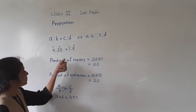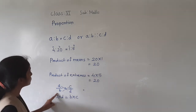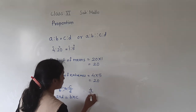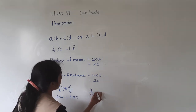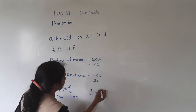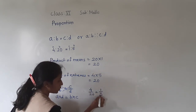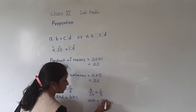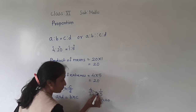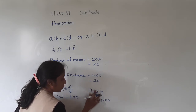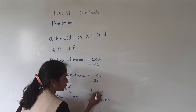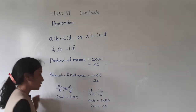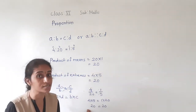See here — 4 is to 20 means 4 upon 20, and 1 is to 5 means 1 upon 5. Cross product: 4 into 5 equals 20, and 1 into 20 equals 20. So in proportion, their cross products are equal.